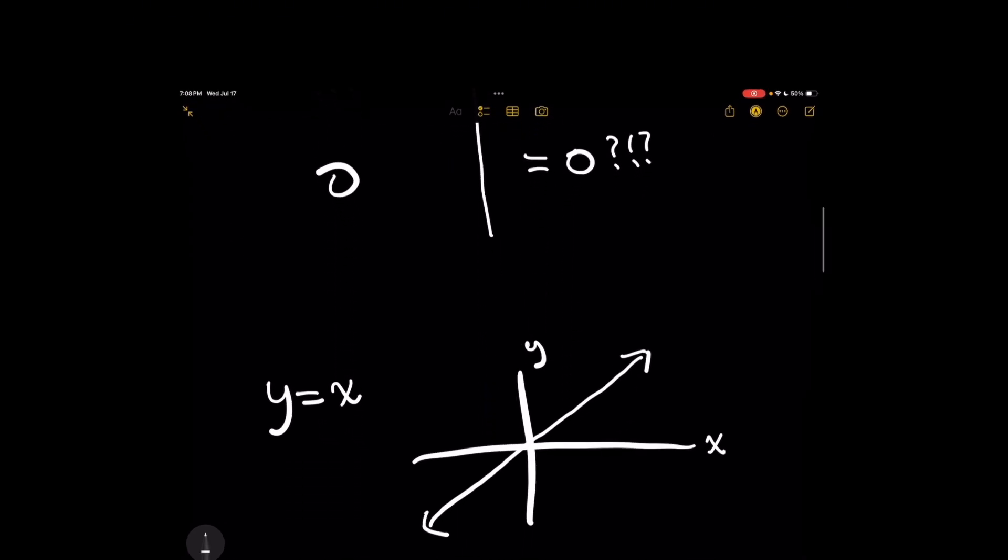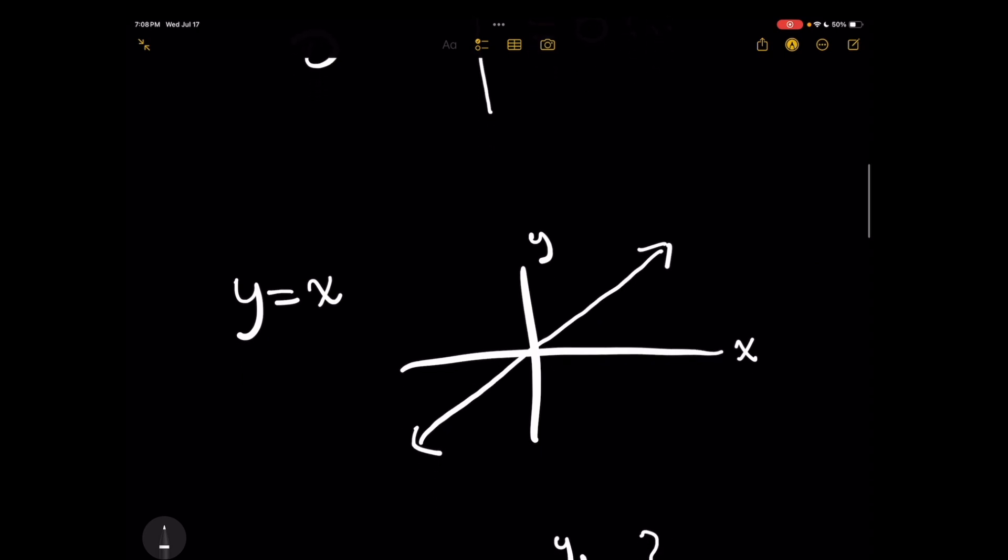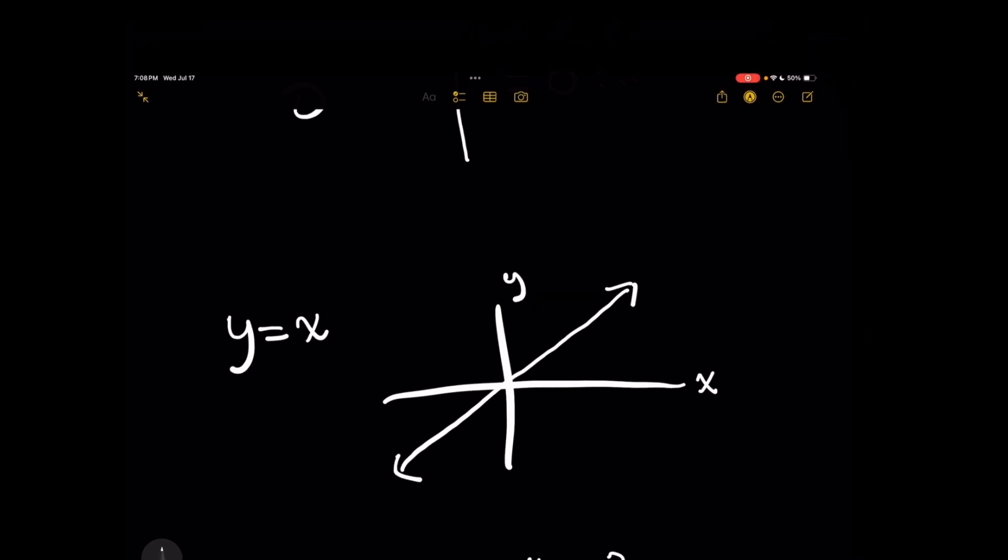So moving on, the next thing I want you to try out is to maybe look at this visually. If I were to graph y equals x, that left-hand expression, on the Cartesian plane, you'll just get the simple line, right? There's nothing special here. There's no issues with jump discontinuity or any holes in the graph.